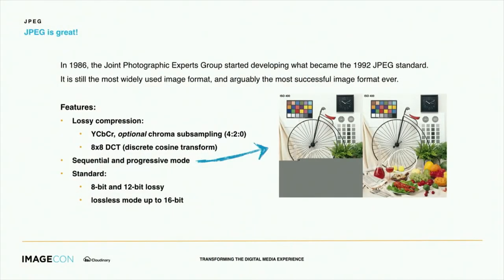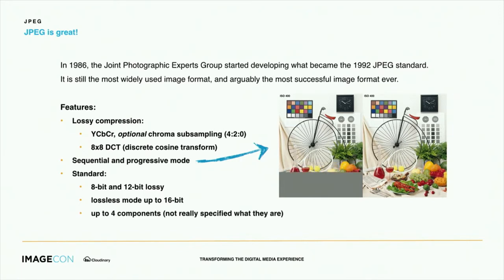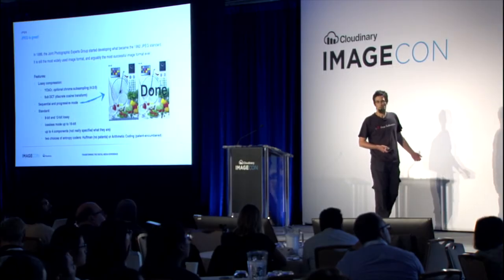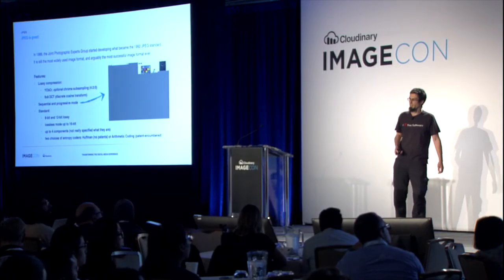The actual standard — if you read it, which I don't necessarily recommend — specifies an 8-bit and a 12-bit mode for lossy. It also specifies a lossless mode that can do up to 16-bit. It specifies that the format can handle four components, so theoretically it could do RGBA. The spec doesn't really specify what the components are. And there are two choices of entropy coding: Huffman, which is not patented, and arithmetic coding, which is currently not patented, but in 1992 it was.